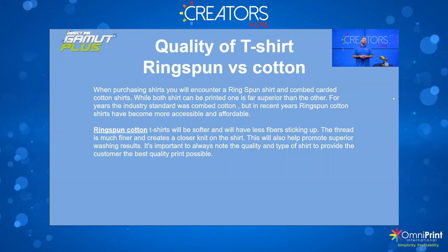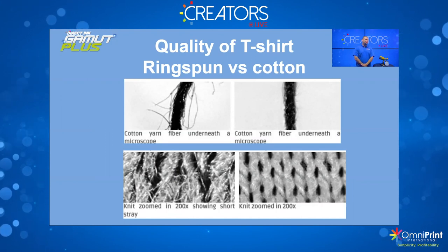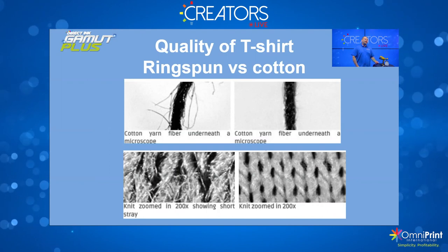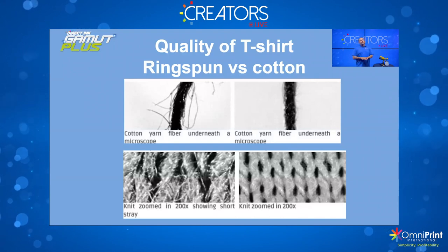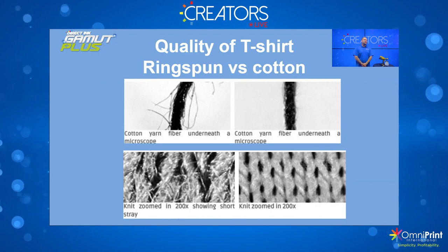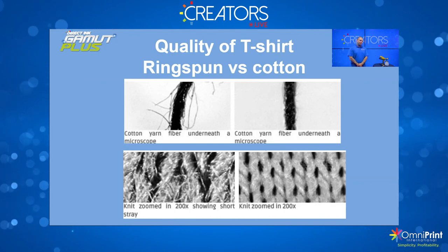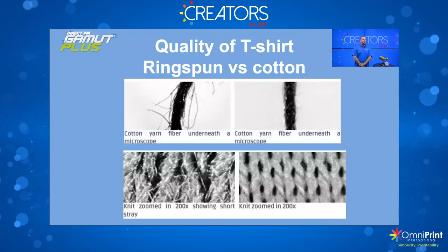Here's a visual of combed cotton versus ring-spun cotton. The combed cotton shirt is very messy — very hairy, lots of fibers sticking out. The ring-spun shirt has much cleaner fibers. When pre-treating a combed cotton shirt, you have to fill in all those gaps, whereas with the ring-spun shirt it's a much neater weave, easier to get a nice even coat. Those fibers sticking out can also cause issues with print quality.